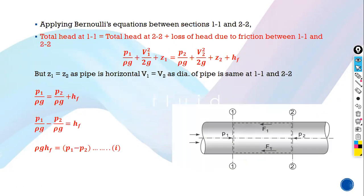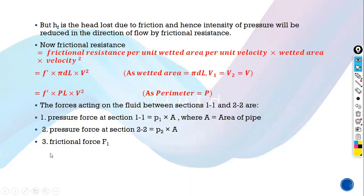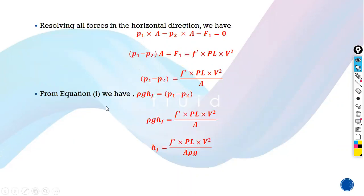Since we derived earlier that P1 minus P2 equals rho G HF, we substitute this value into the equation. So we get rho G HF equals F' P L V squared upon A, which gives us HF equals F' P L V squared upon A rho G. This HF is the energy loss we need to calculate.